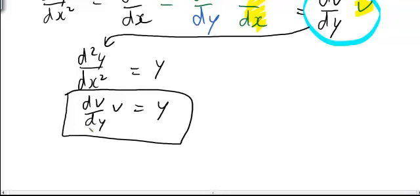First step is we want all the v's to one side, all the y's to one side, so just rearrange, multiplying both sides by dy, we get v dv is equal to y dy.